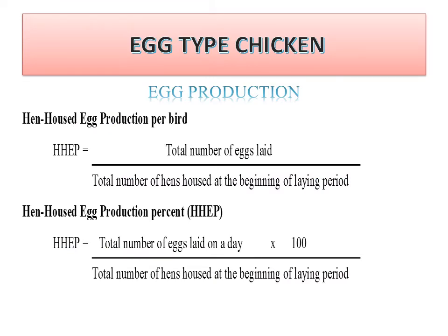Here are two formulas used to determine egg production in any farm, generally managed by all layer farms. The first is hen housed egg production per bird, but most poultry farmers prefer the second formula — hen housed egg production in percent. The basic difference is that the first gives production per bird while the second gives egg production as a percentage.